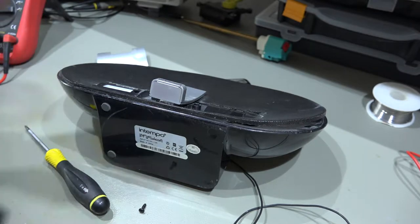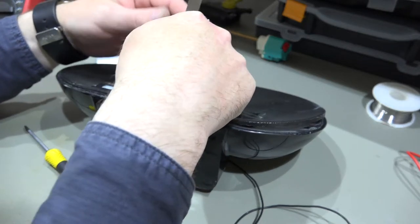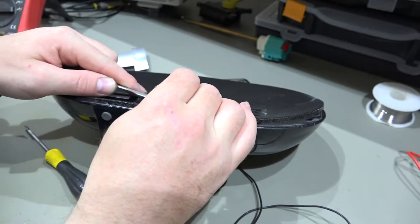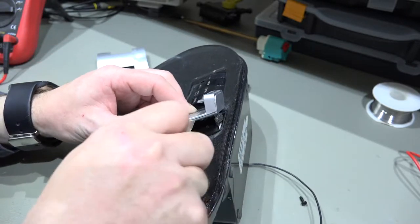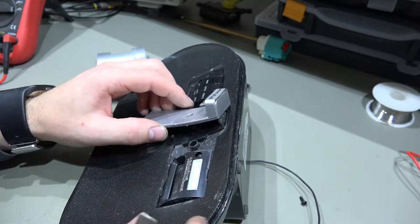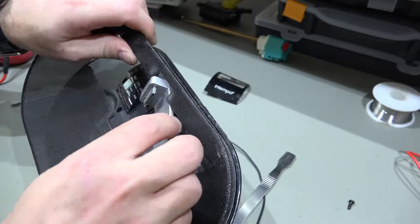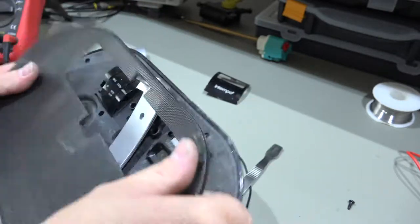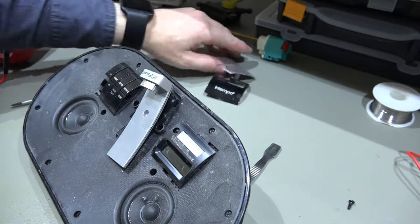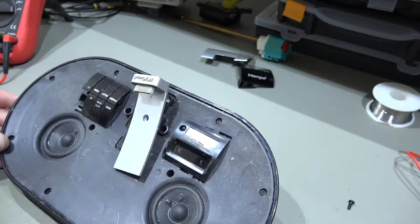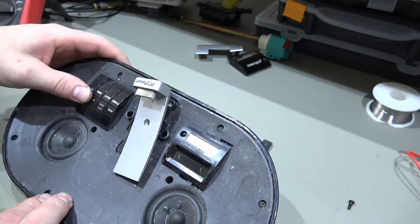So if we remove that screw, hopefully this bit will come out. Yep, that's okay. So we've got a little ribbon cable going through onto this unit here. So I expect what we need to do is try and split this unit. That's the speaker grille removed. So put those bits to the side. So we've now got a series of screws running all the way around.